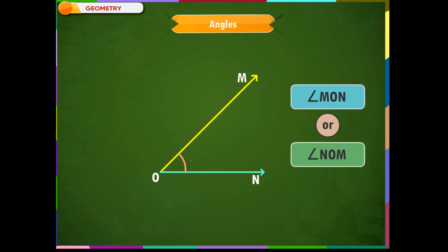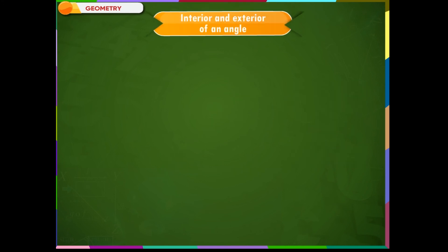Symbolically, we can write angle MON as shown in the screen. Interior and exterior of an angle.